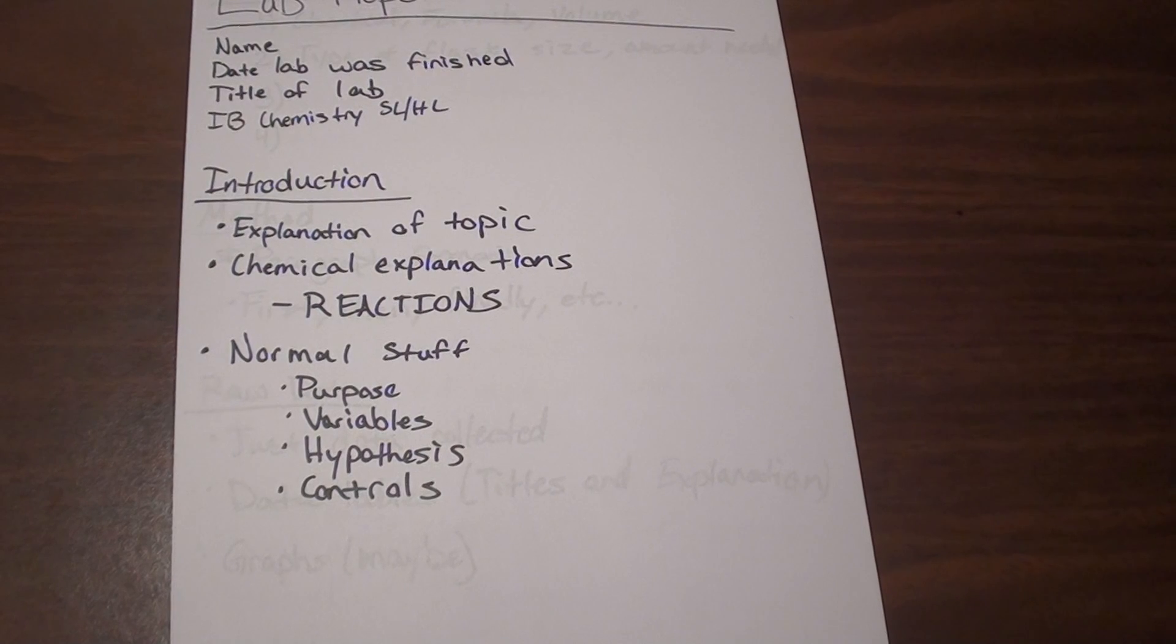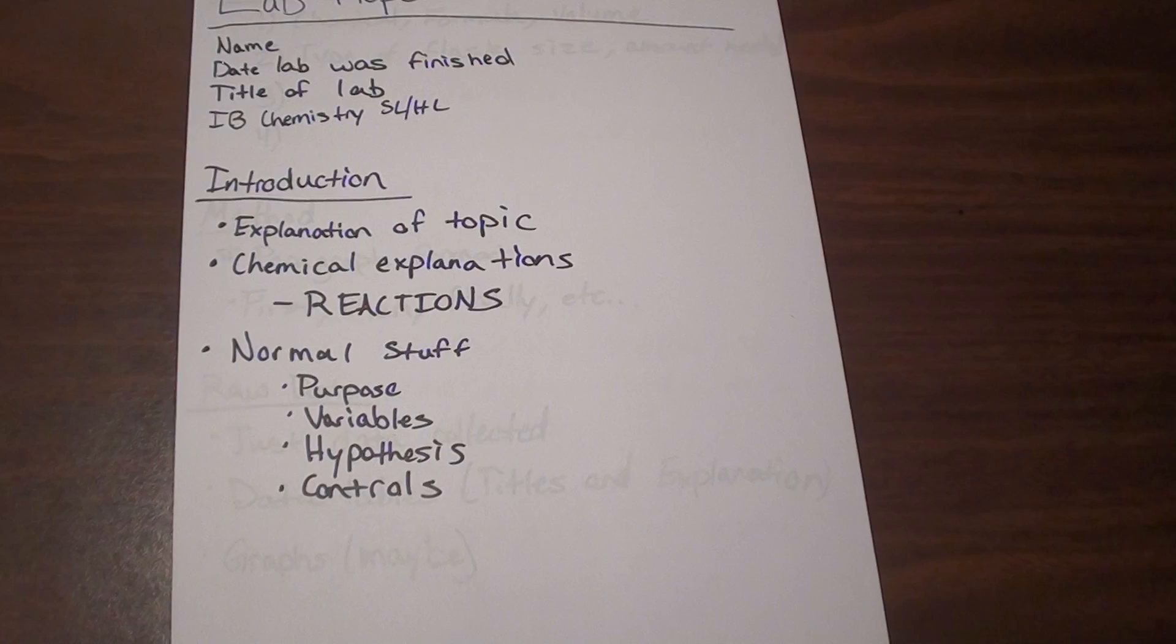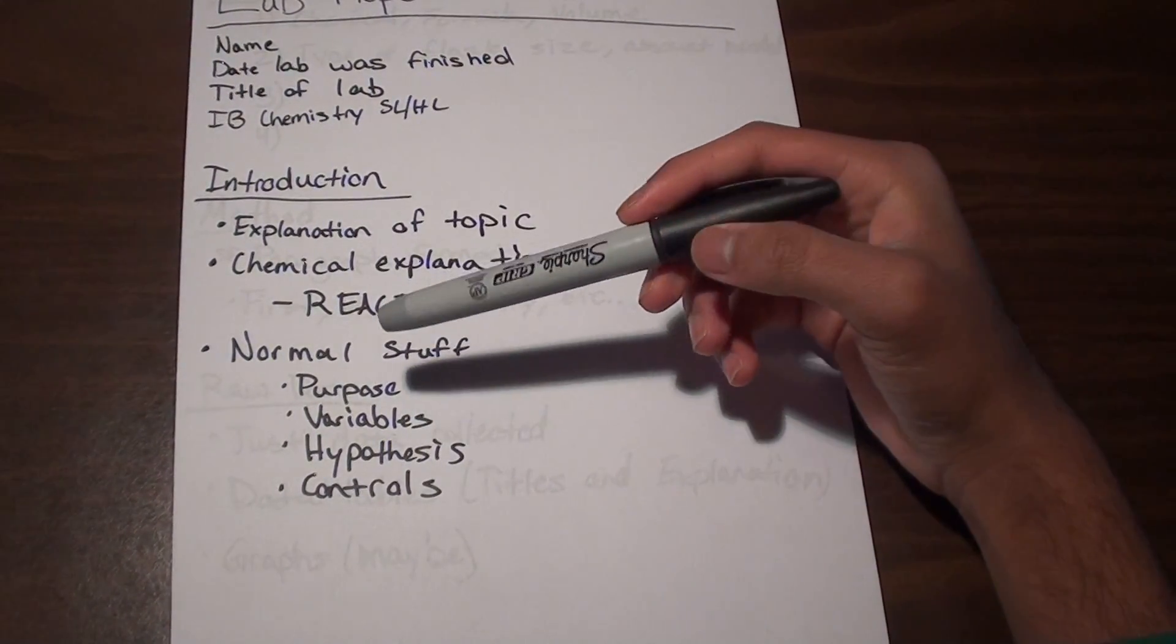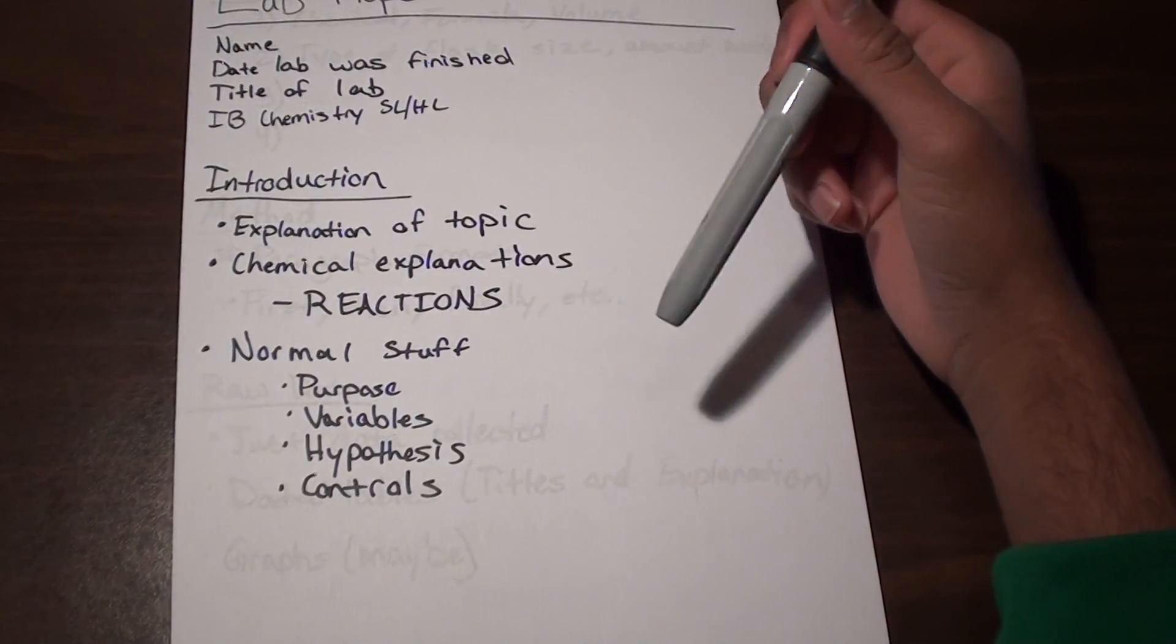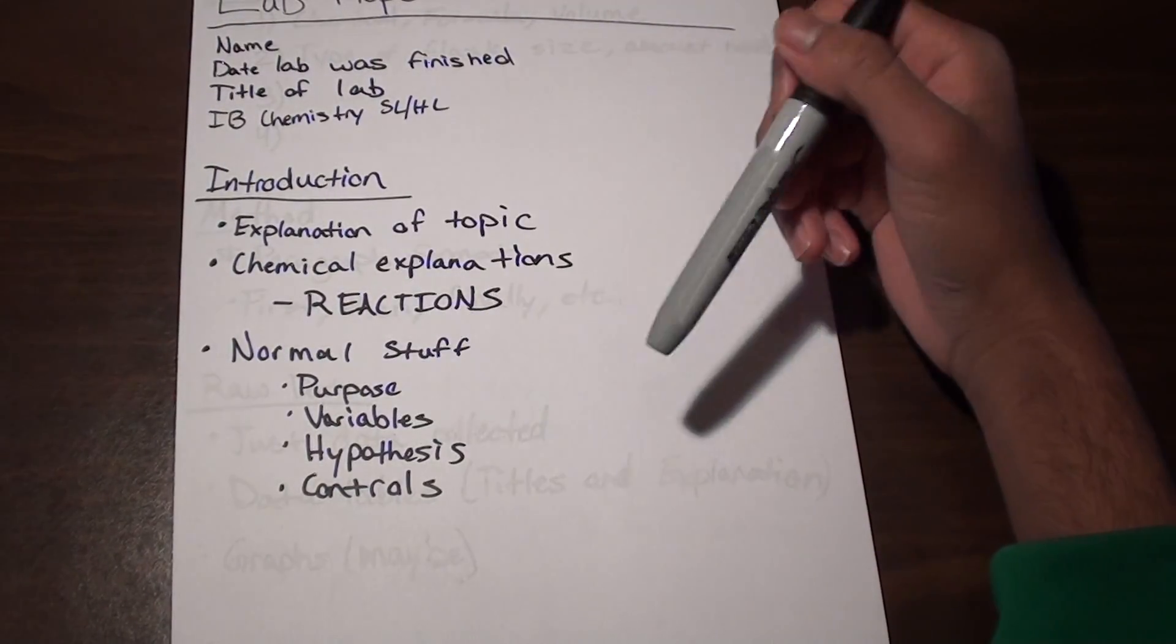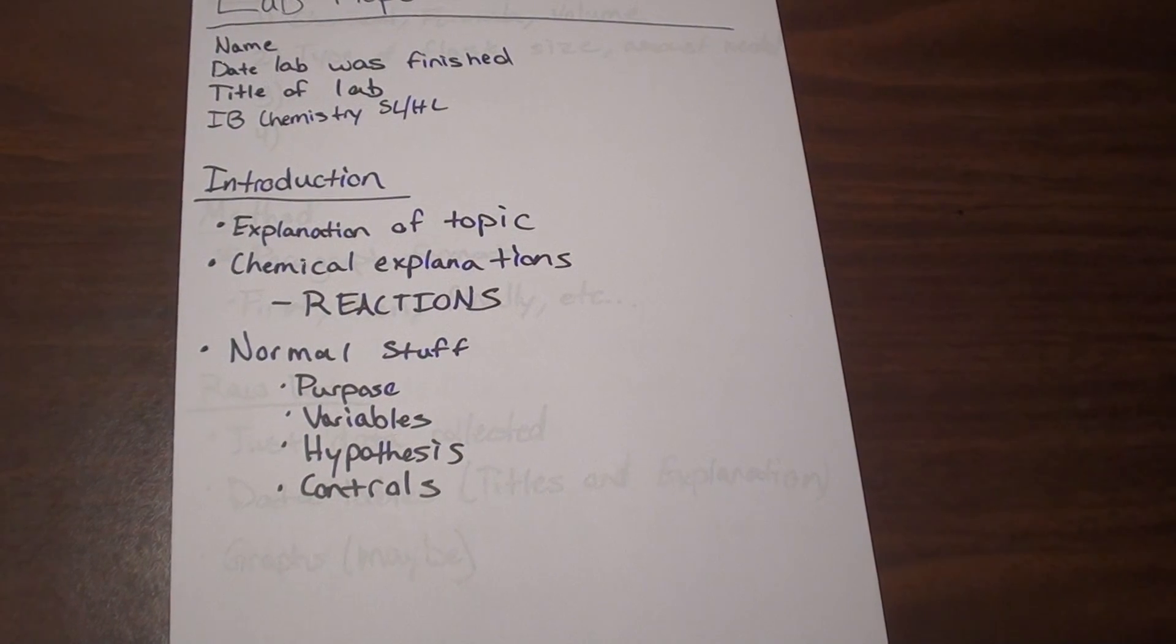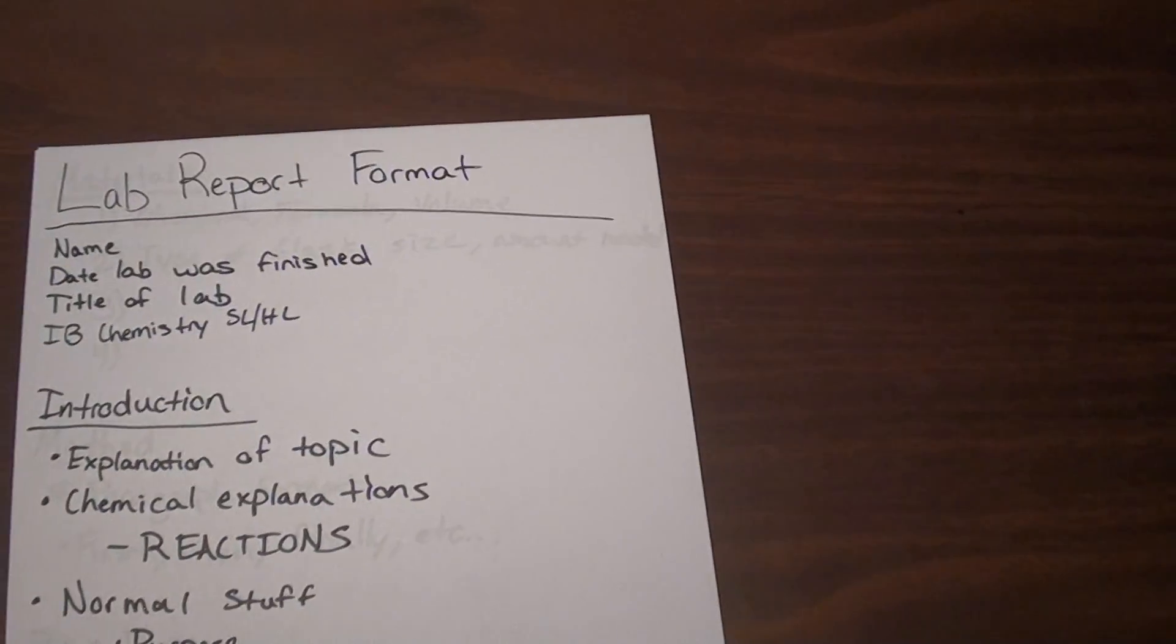And then finally you're going to want to put the normal stuff. This is pretty standard, the same thing you did in biology. You're going to want to have the purpose of the lab, which you might have worked into the first part. You're going to want to clearly state the independent and dependent variables. You're going to want to put a hypothesis down, and you're going to want to also have what variables you intend to control and how you're going to control them.